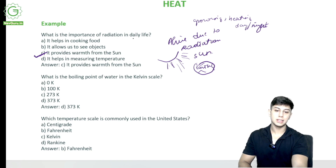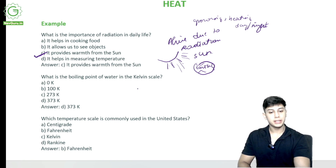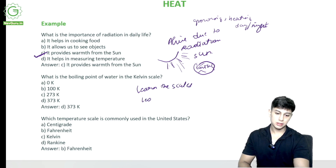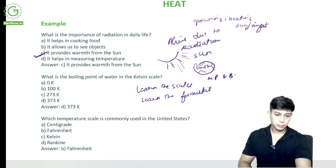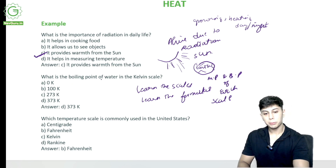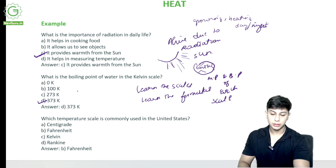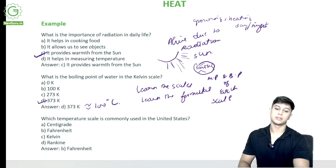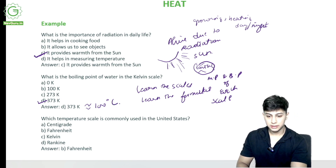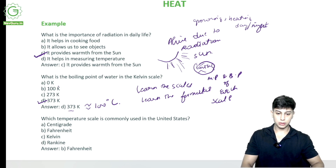What is the boiling point of water in the Kelvin scale? Remember to learn the scales and formulas — the melting point and boiling point on each scale. The boiling point of water in the Kelvin scale is 373 K, which corresponds to 100 degrees Celsius.